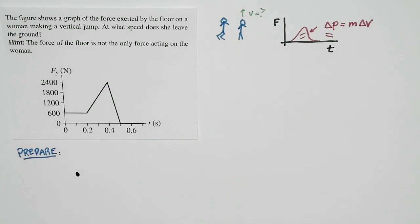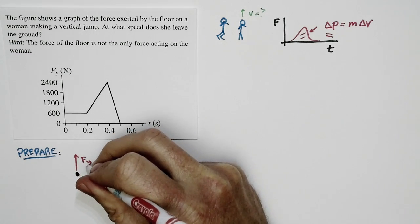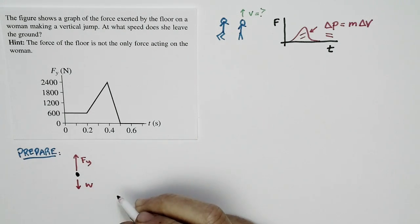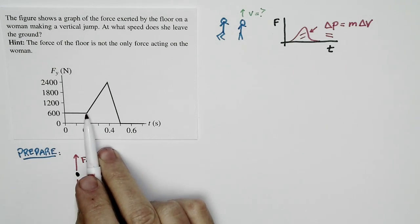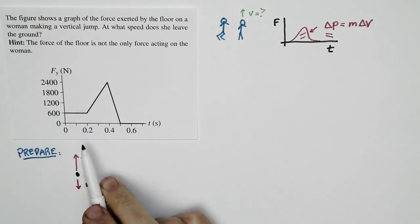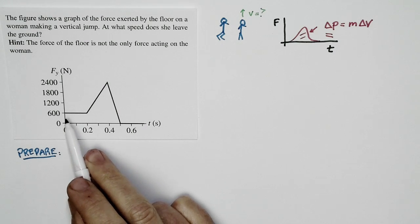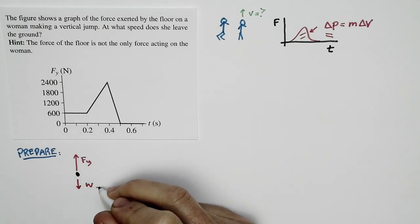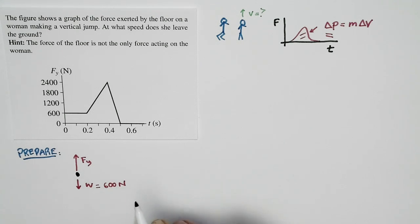In any instance up until the woman leaves the floor, there are two forces acting on her: the upward force of the floor, given by Fy — that's what's graphed — and a downward weight force. During this initial phase of the motion, Fy is just equal to 600 Newtons. We'll assume this phase corresponds to her being crouched and ready but not yet pushing. So the weight force of the woman is 600 Newtons.